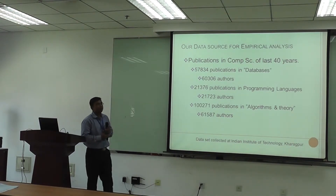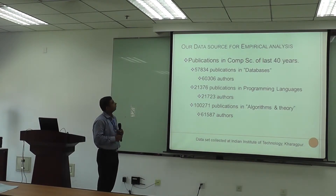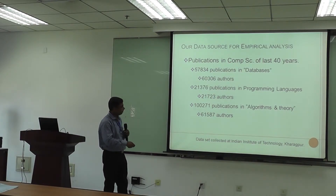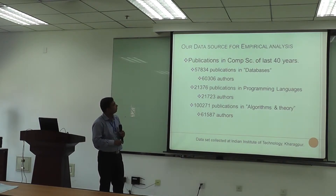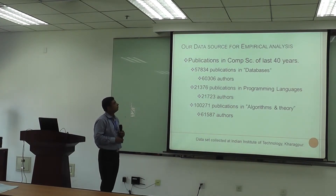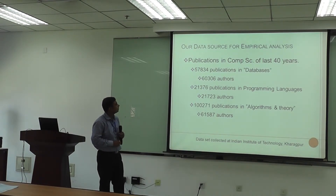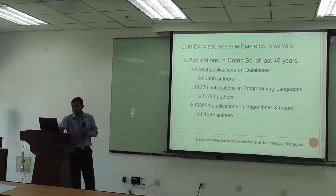We conducted an empirical analysis using data from publications in computer science over the last 40 years. The data was collected at other institutions. We identified and observed three areas. In one area we had around 60,000 authors, and in algorithms we had more than 100,000 publications with a corresponding number of authors. We observed the trends across these datasets.